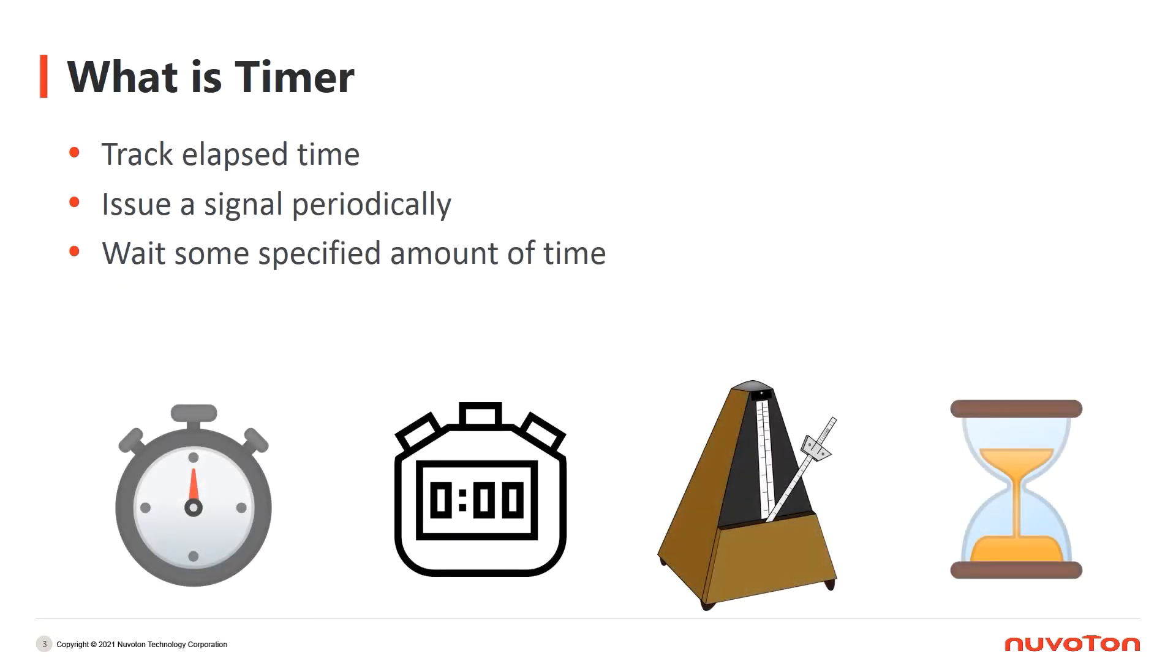So what is timer? How can we use timer? Basically, timer is used to count. You can use timer to count time or events. For example, you can use a timer to periodically trigger an interrupt every five minutes. You can use a timer to count the time between two events, and you can also count number of events by a timer.